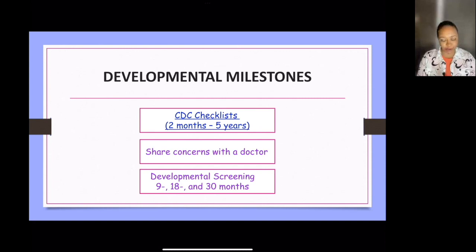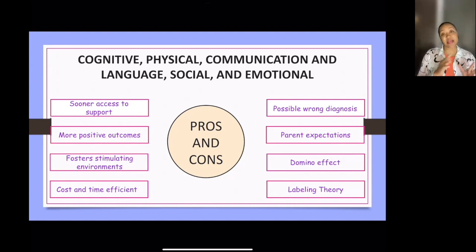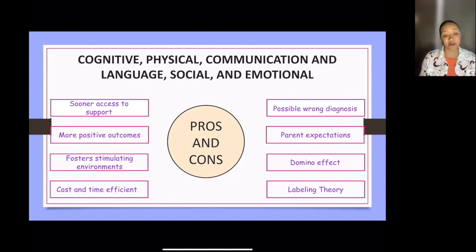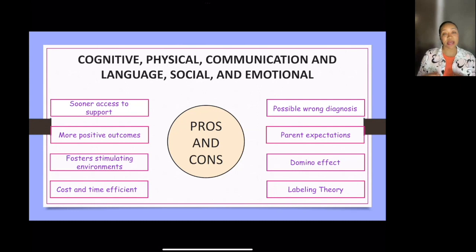The pros of early identification include sooner access to support and more positive outcomes. Young children up to the age of five have incredibly adaptable brains, so if you can catch different learning or developmental issues early, they're more likely to have a successful outcome. It fosters a stimulating environment because they can get the supports they need early, which can change their behaviors and neural cognition pathways. It's also cost- and time-effective — the sooner you start, the sooner you can make things better before they get worse.